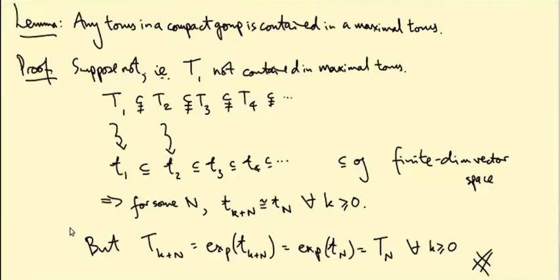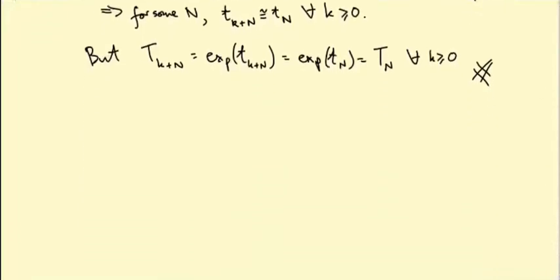So it's a proof by contradiction. Perhaps you can get away with phrasing it in a more constructive way, but this shows that any torus in a compact group is contained in a maximal torus. Okay, so this completes the proof that any compact group contains a non-trivial maximal torus. So how are we going to use this?